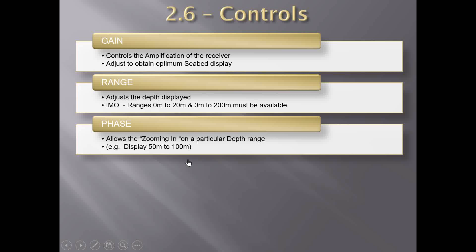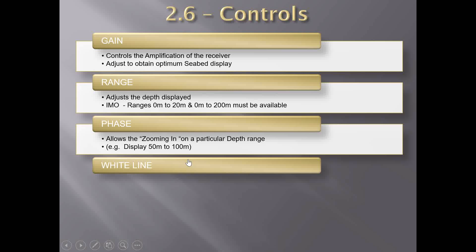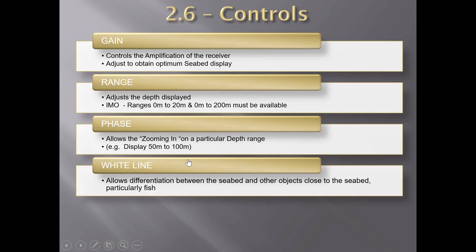Many echo sounders also have a phase range facility, where the operator can select both the upper and lower limits of the depth to be displayed. For example, a sounder with this facility may be set to display depths from 50 to 100 meters instead of the normal 0 to 100 meters. With the phase range switch, you can focus on a specific range within that window. This function is useful when the vessel is operating in an area with little variation in depth, and the scale is optimized to display greater detail of the bottom contours.